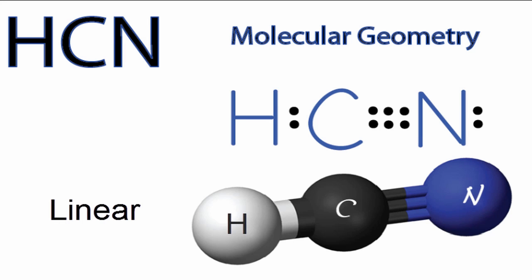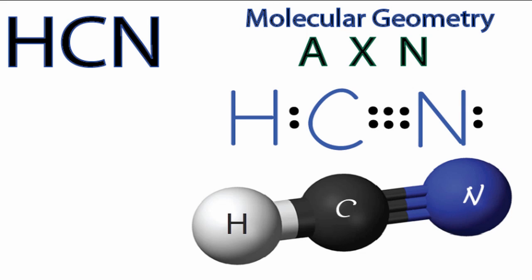We could also use the AXN notation to make sure we have the right molecular geometry. A, that would be the central carbon. X, that would be the number of atoms attached to that central carbon. We have two, the hydrogen and the nitrogen.